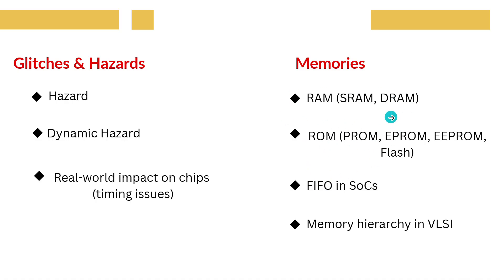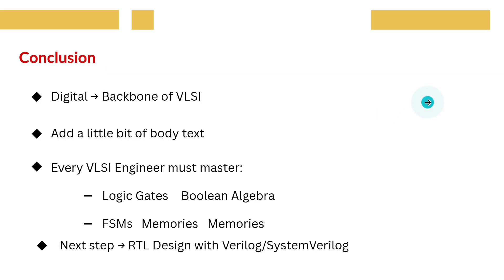FIFO is widely used in SOCs for buffering data. Memory hierarchy, cache, main memory and secondary storage all come into play when designing efficient systems.